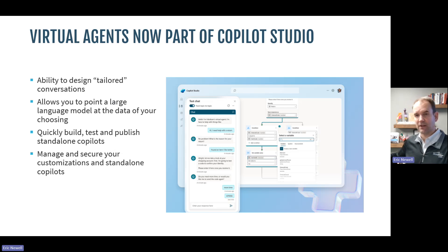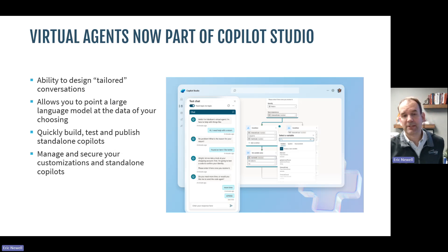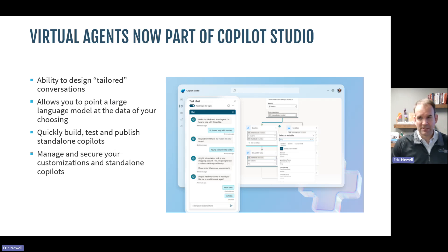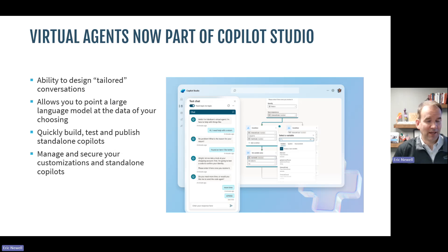For example, you'd type: 'What are our store hours?' and it would return '11 a.m. to 8 p.m.' But in the new model, it can search your data sets to give those answers without you having to type them all in. You can quickly build, test, and publish standalone Copilots, even pointing one at a small amount of information to auto-create it. I built one that just points at our stoneridgesoftware.com blog and it can answer questions based on blogs we've written over the years. You can also manage and secure these standalone Copilots.